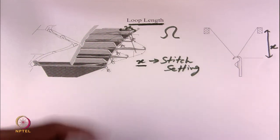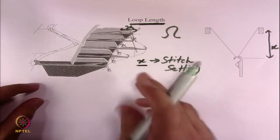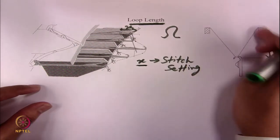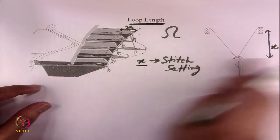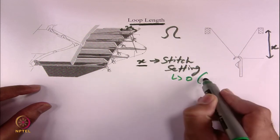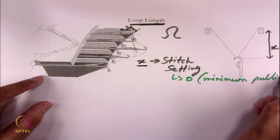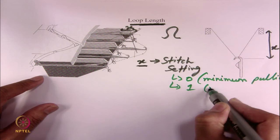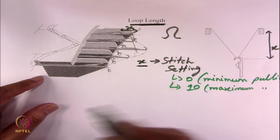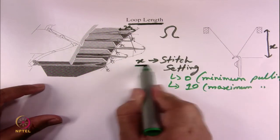As I have already shown you in one of the lectures, you can change the stitch cam setting from 0 to 10. At 10, it means the needle is pulling the yarn to the farthest from the bed corner — maximum pulling. When x is less, when you keep the stitch cam setting at 0, that means minimum pulling. And 10 means maximum pulling. So this stitch cam setting can be changed, and once you change it, x will change automatically.